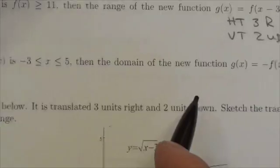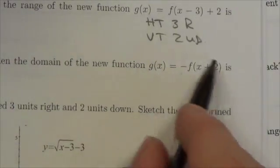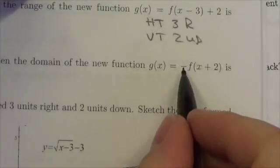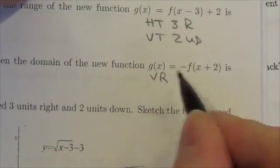Then the domain of the new function - we've got to figure out what's going on here. What transformations? Well, when you've got a negative outside the function here, that corresponds to a vertical reflection.